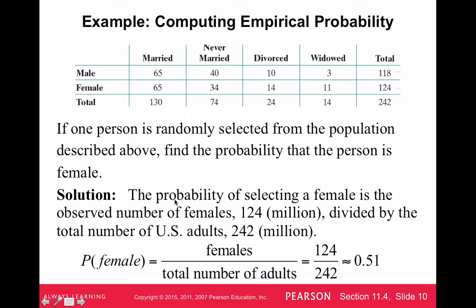If the question said, what's the probability that the person is married, then the total number of people that are married is 130. We would take 130 and divide by 242. That's how we do empirical probability. Very much like theoretical, we're just taking the number of the characteristic and dividing by the total number from the population or sample.